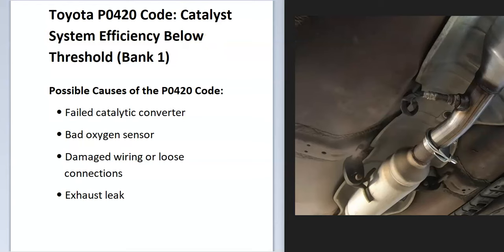What does this mean? If the catalytic converter falls below 95% efficiency, the onboard computer will throw out this code because it thinks it's failing. Bank one is always the side of the engine with the number one cylinder, so if you have a V6 or V8 engine, locate the number one spark plug — that'll be the side of the engine having the issue.